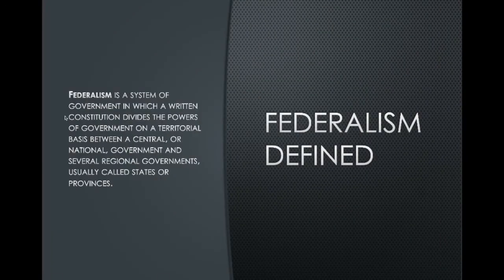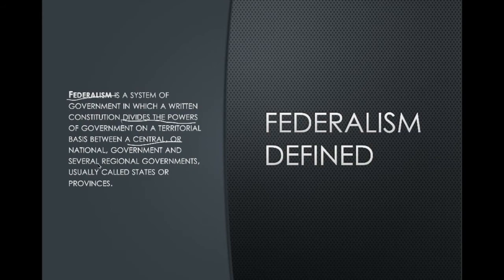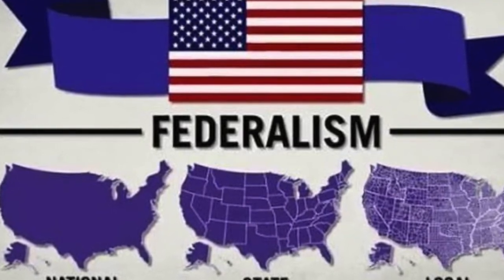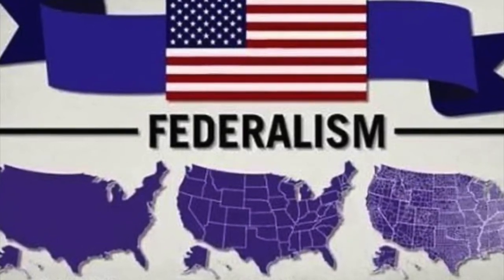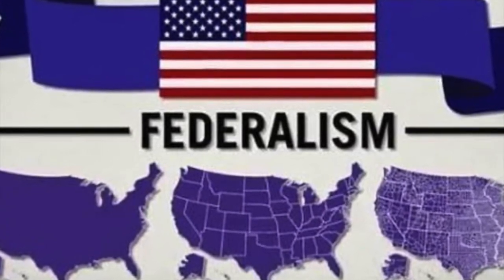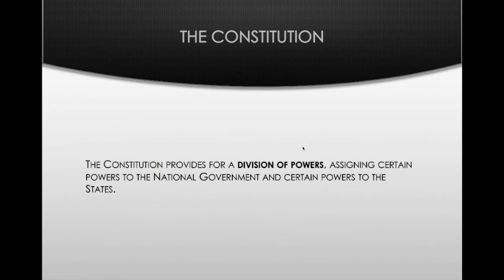Federalism means you have a system of government with a division of power. Some powers are given to a central — or federal — government, and then you have regional governments. In our situation, those are the states, and then there are also local organizations. We'll look at that hierarchy of power a little later. The Constitution specifically addresses this division.